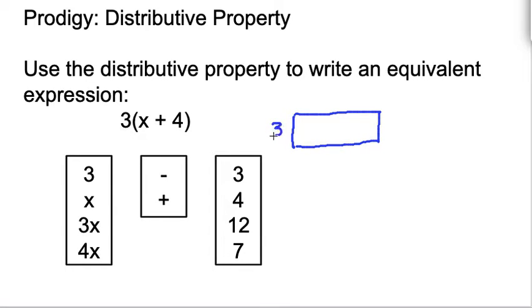So we have 3 times x plus 4. We look at this as length times width and we're going to find the area of this by finding the area of each one of these boxes here. So we end up with 3 times x to find the area of this one, would be 3x, and then 3 times 4 which would be 12.